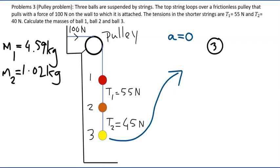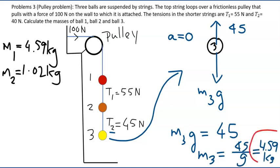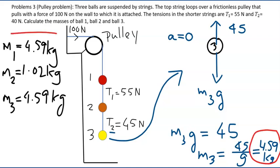For Ball 3: forces are its own weight M3·g downward and T2 = 45 N upward. Since it's not moving, M3·g = 45, so M3 = 45 / 9.81 ≈ 4.59 kg. Those are all the masses computed, and that solves the problem.